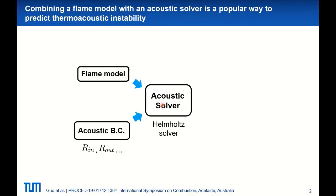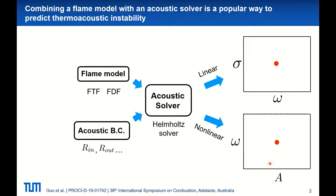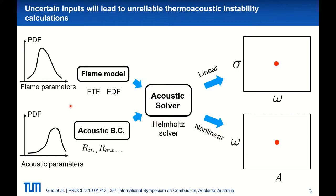To predict thermoacoustic instability, a popular way is to use an acoustic solver like a Helmholtz solver combined with a flame model and proper acoustic boundary conditions. For the linear case, we have a flame transfer function (FTF) and the outputs of interest are the mode frequency omega and the growth rate sigma. For the nonlinear case, we may have a flame describing function (FDF) and the outputs of interest are the limit cycle frequency omega and the limit cycle amplitude A.